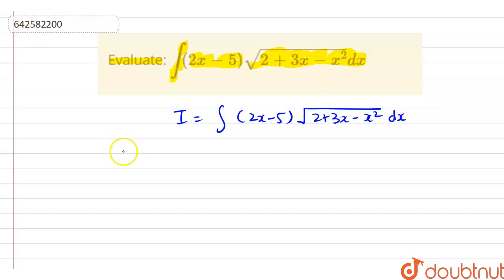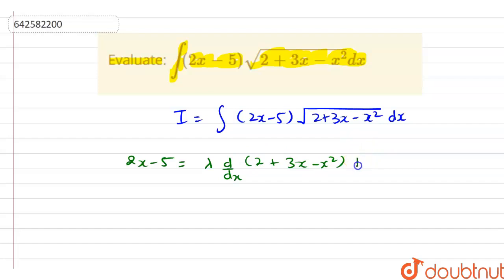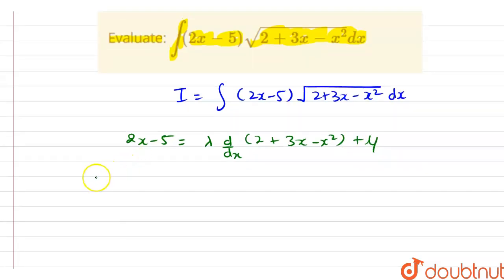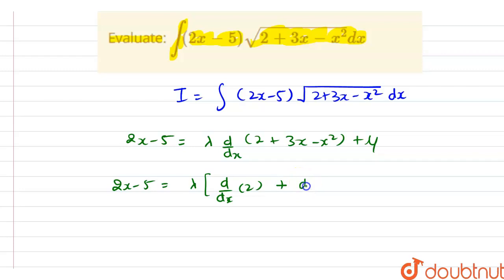Now let us assume that 2x minus 5 is equal to lambda into d/dx of (2 plus 3x minus x square) plus mu. So we have 2x minus 5 equal to lambda into (d/dx of 2 plus d/dx of 3x minus d/dx of x square) plus mu.